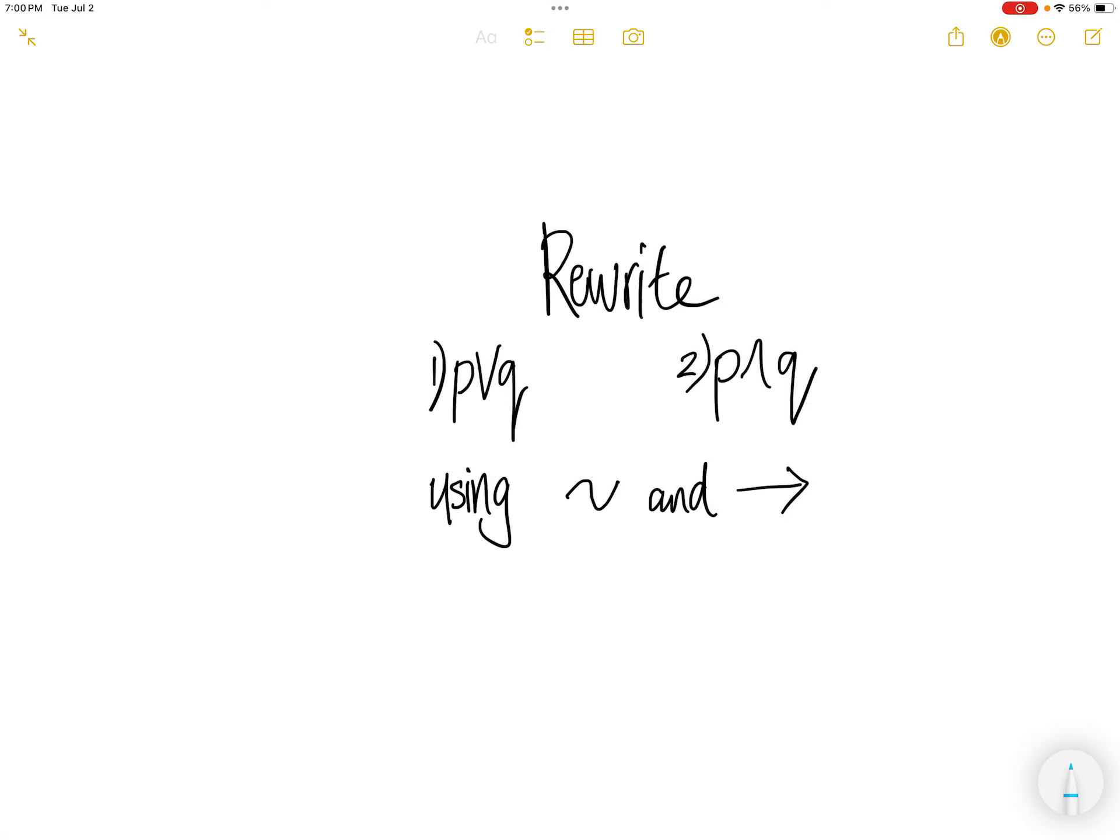Hello, welcome everyone. Let us rewrite p or q, and p and q, using NOT and implication symbol.